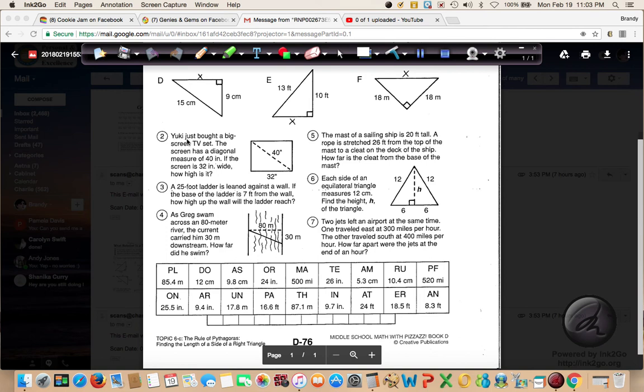Because what I've found is the word problems are trickier than when they just give you a plain old right triangle. Number two here: Yuki just bought a big screen TV set. The screen has a diagonal measure of 40 inches. If the screen is 32 inches wide, how high is it? So what they want to know here is what is this side, the height. They want to know what is X. So if it's a TV, in this case they gave us a rectangle, so we can put our right angle there. Go across. So this is going to be our C. A, B, or A, B - doesn't matter. But I think you guys can solve that one at this point. Not too tricky.